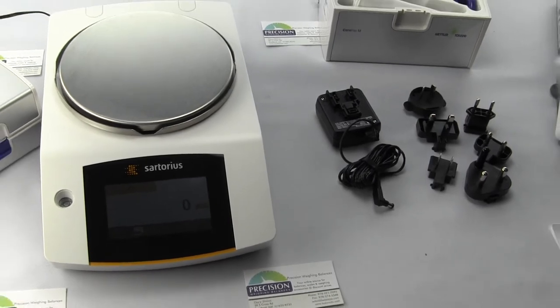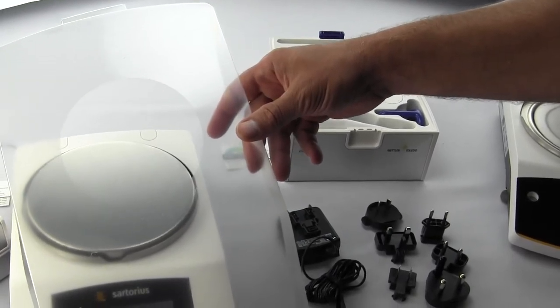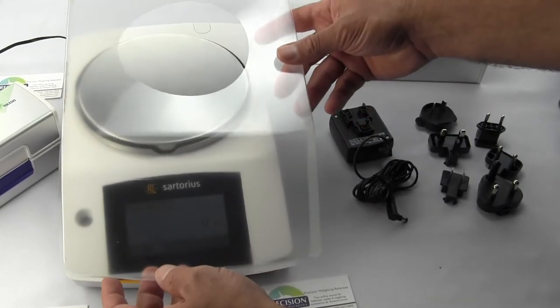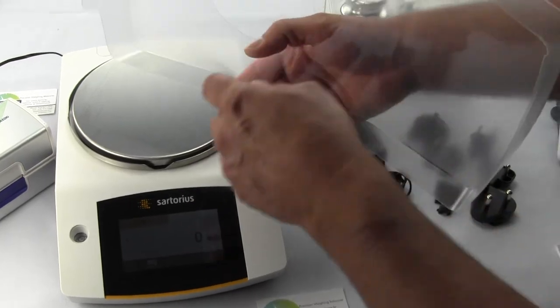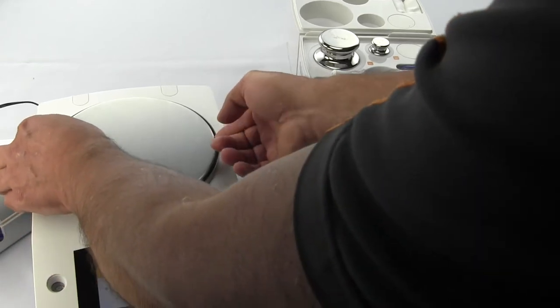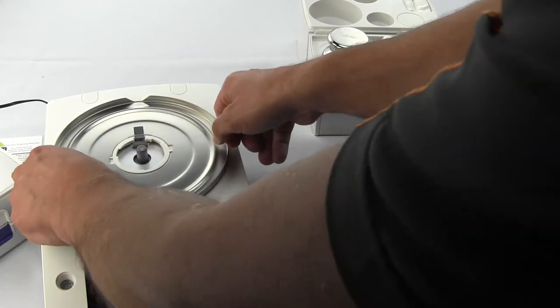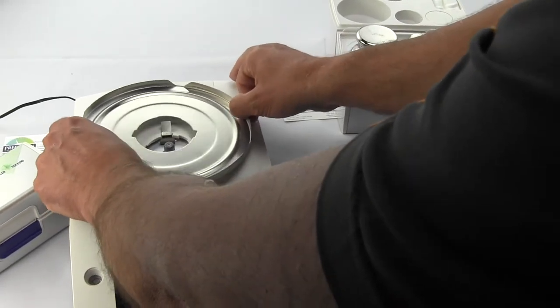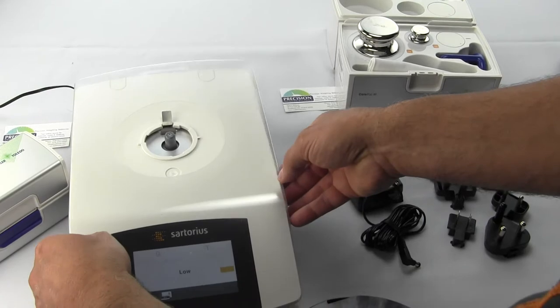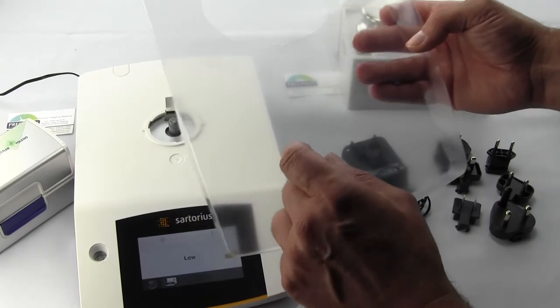You also get one splash guard that comes with the unit. This is a transparent plastic in-use cover to prevent splashes. You'll notice there are glue tabs, so it just covers over the balance. You can buy additional in-use covers, but they're pretty expensive—like $57 each from Sartorius.